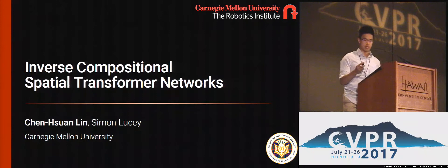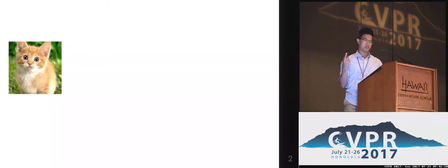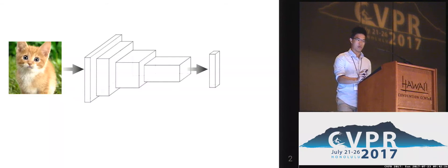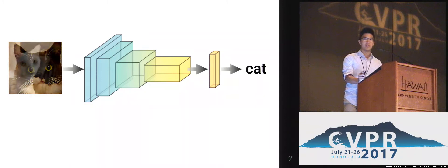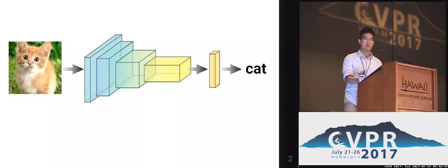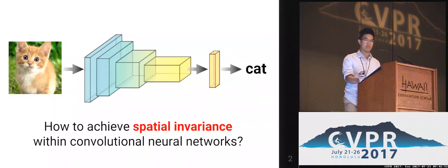Suppose that we have a visual recognition problem to solve. Our computer vision algorithms would probably involve training neural networks. And suppose today that we want to do a classification task. We're typically fitting a lot of the training data, and hope that the network will learn something meaningful and representable of the data. But if we look at the training data, we will find that there are a lot of variations, not only in terms of appearance, but also the spatial locations and the geometric deformations. So how might we learn to achieve some sort of spatial invariance within neural networks, so as to increase the robustness of our algorithms?